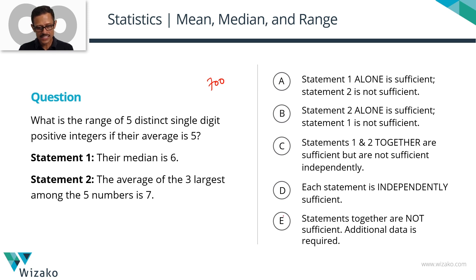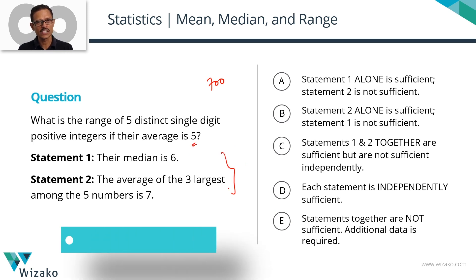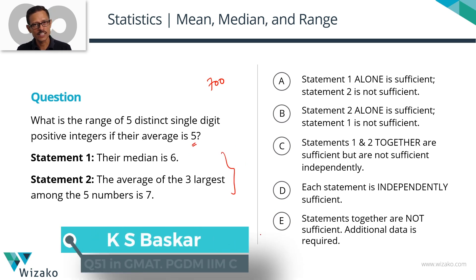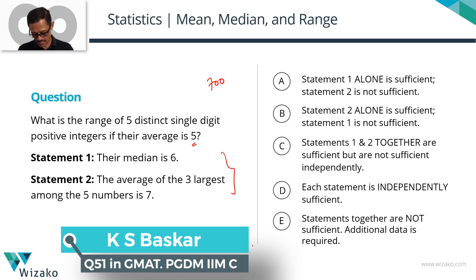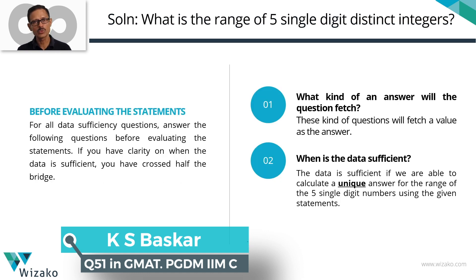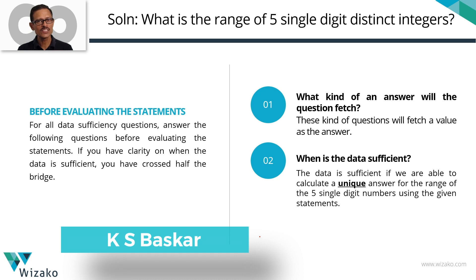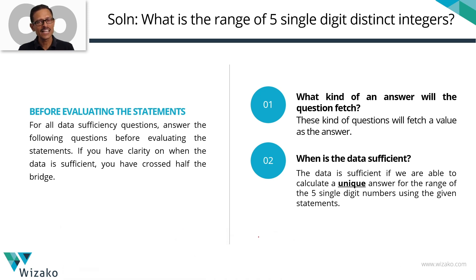What is the range of five distinct single-digit positive integers if their average is 5? As always, we have two statements. For these what-is kind of questions, the answer will be a value.